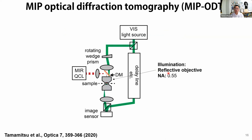This is the schematic of our mid-infrared photothermal ODT technique. To change the illumination angle, we installed a rotating retroprism, and by rotating this prism we can change the beam direction and thus the illumination angle. We also use two objectives sandwiching the sample, and to illuminate the IR light onto the sample we use a reflective objective with NA of 0.55.